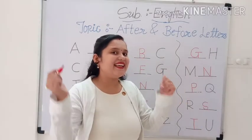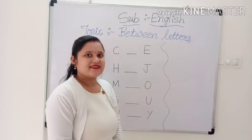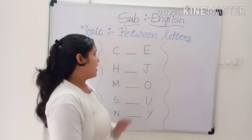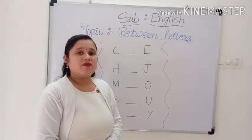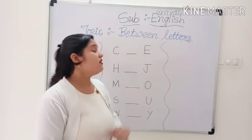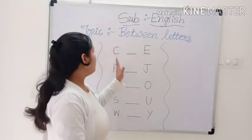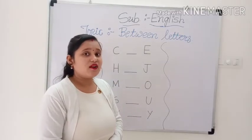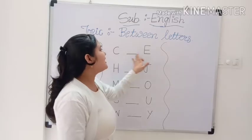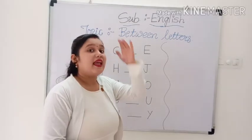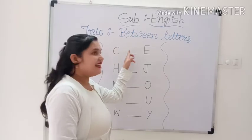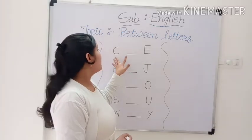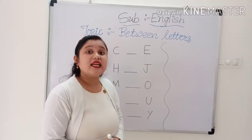Now we did it — between letters. Now, here are some letters. You tell me which letter comes between C and E. Which letter comes between C and E? A, B, C, D — which letter comes between C and E? D.